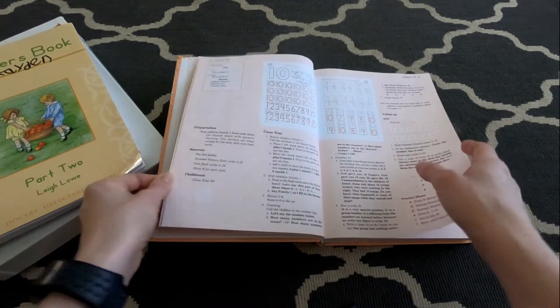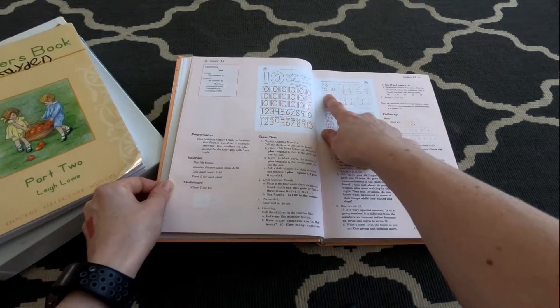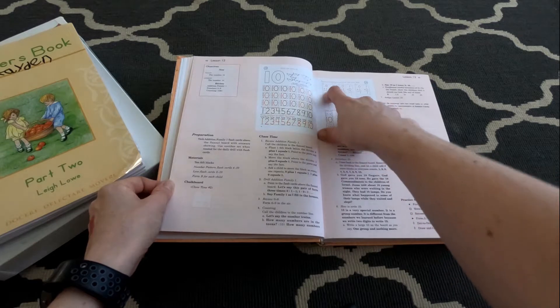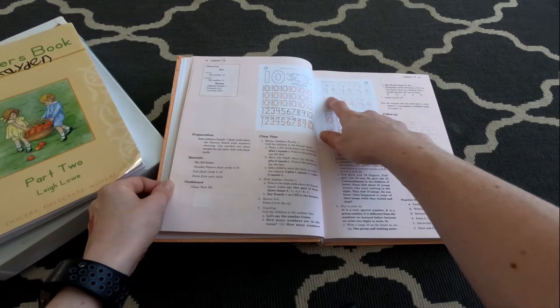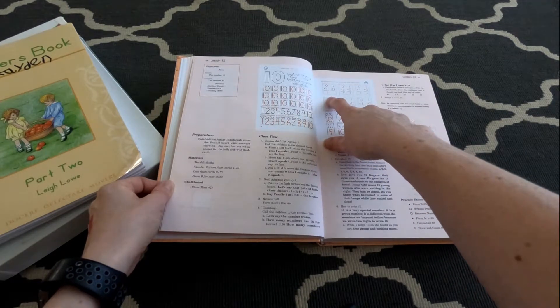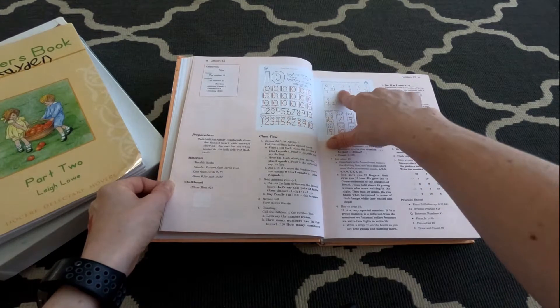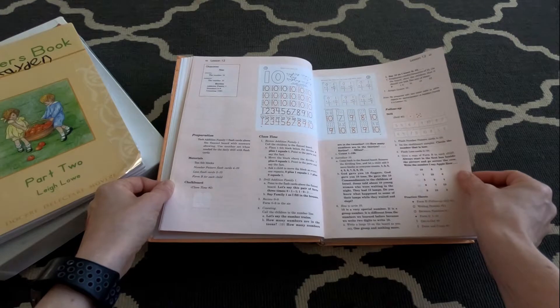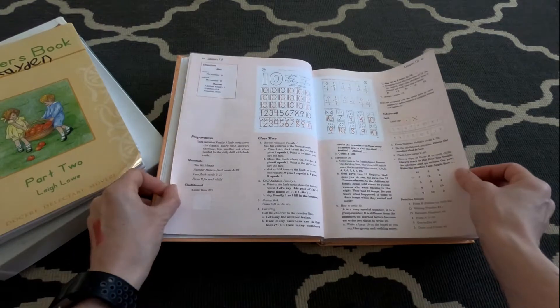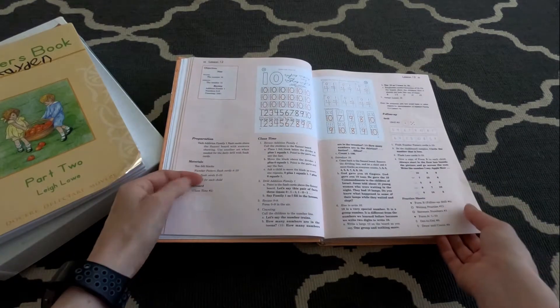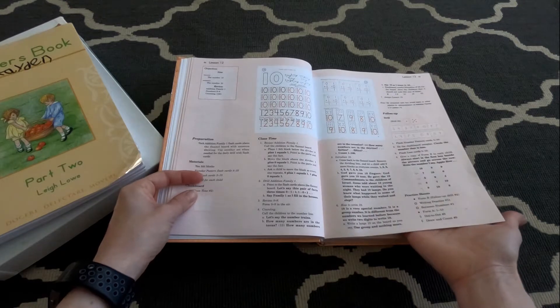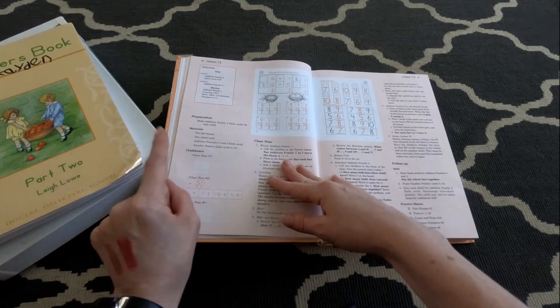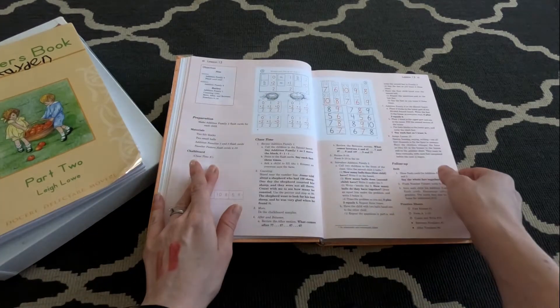And the thing that I love about this is it teaches very systematically your addition facts. They call them fact houses. So they make these little fact houses and we first drill and learn everything that adds up to one, which is zero plus one and one plus zero. And we drill that for, I don't know, it varies probably at least a full week depending on where they are. And they'll drill that over and over again during the class time with flash cards, with their practice sheets, and then they'll go to the twos family.